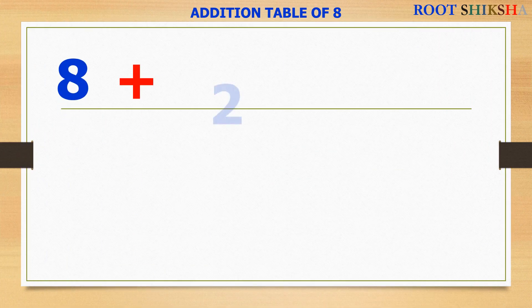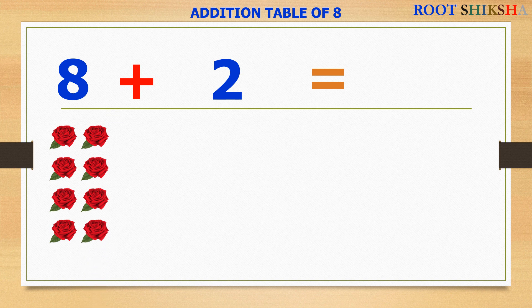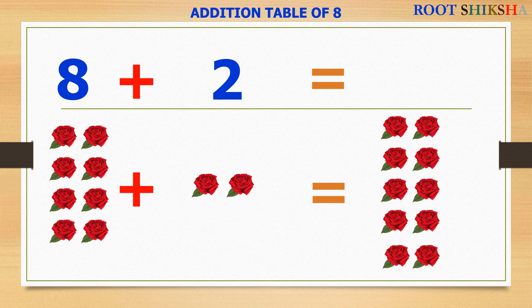8 plus 2 equals to — count with me: 1, 2, 3, 4, 5, 6, 7, 8. 8 plus 1, 2 equals to — count with me: 1, 2, 3, 4, 5, 6, 7, 8, 9, 10. 8 plus 2 equals to 10. 8 plus 1 equals to 9.